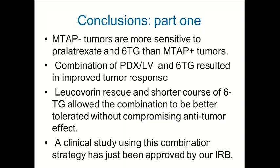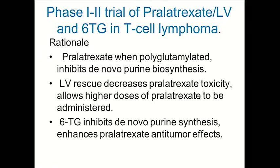We have now generated a clinical study using this combination, which has just been approved by the IRB. The rationale is that pralatrexate, when polyglutamated, inhibits de novo purine synthesis; leucovorin rescue decreases pralatrexate toxicity and allows higher doses to be administered; and 6-thioguanine inhibits de novo purine synthesis. The study will use a fixed dose of pralatrexate with escalating doses of 6-thioguanine to reach the MTD in patients with refractory T-cell lymphoma.